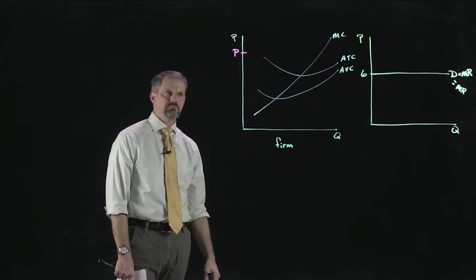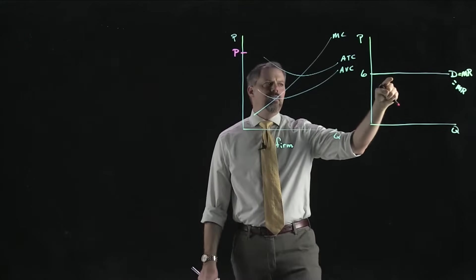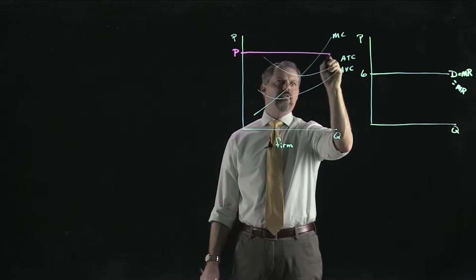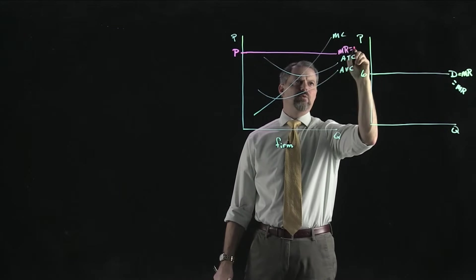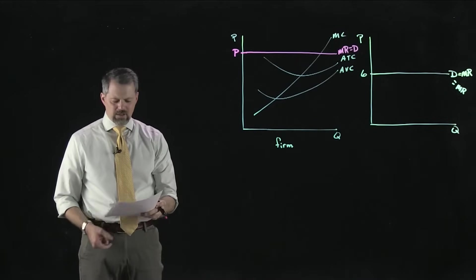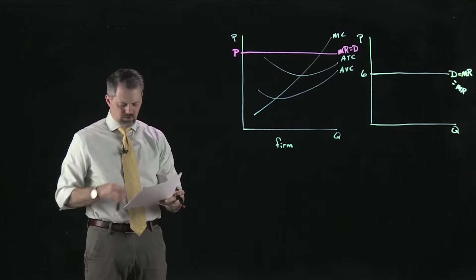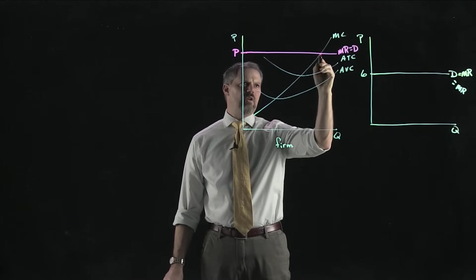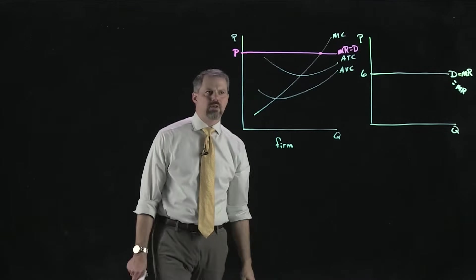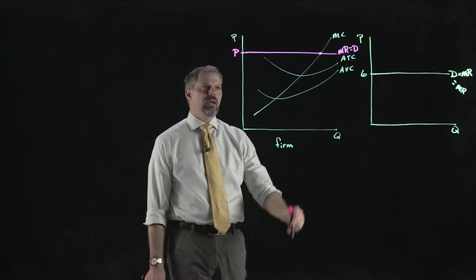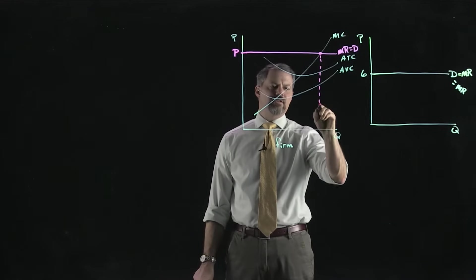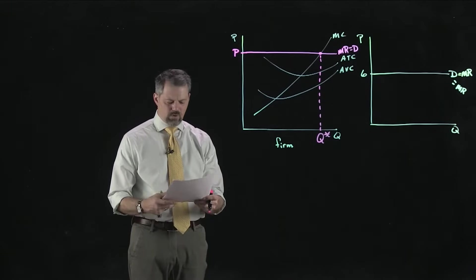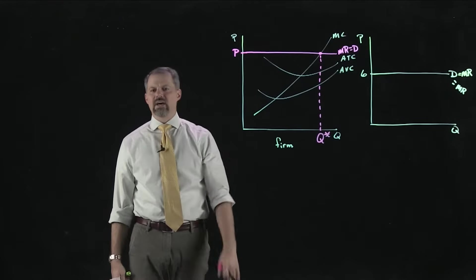We're looking for the place where marginal revenue and marginal cost are equal. Here's marginal revenue, here's marginal cost — right there is where they are equal. The profit-maximizing quantity for this firm is at that intersection, which we'll call Q*. That is the profit-maximizing quantity for this competitive firm. If they produce any less, they're not maximizing profit; if they produce any more, they will not be maximizing profit.